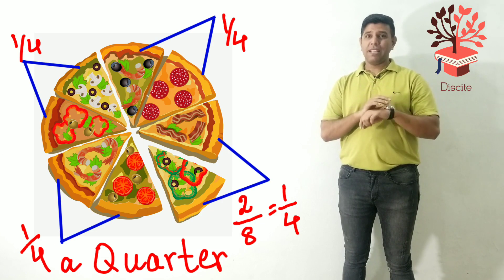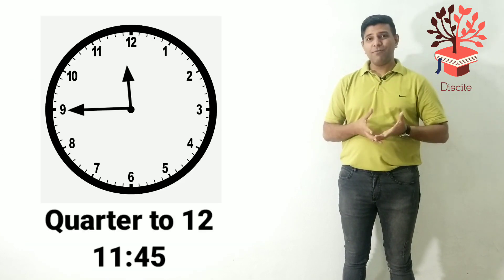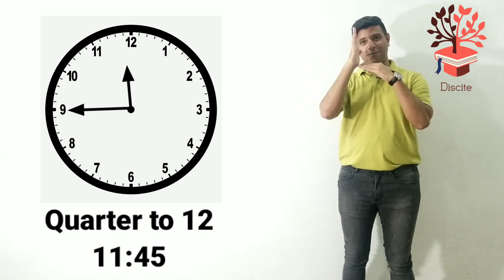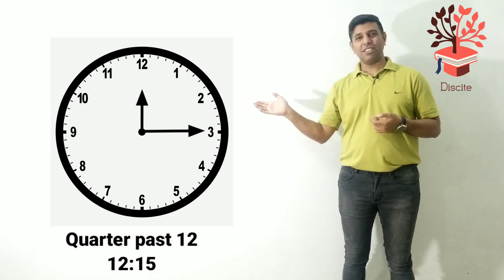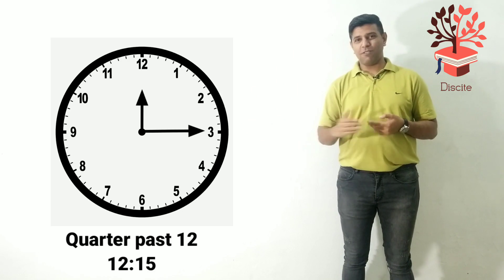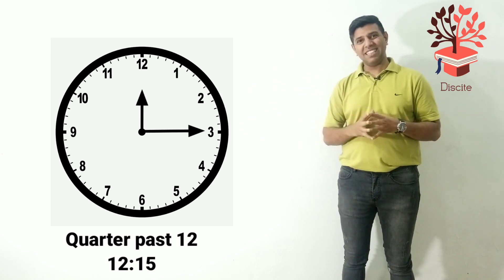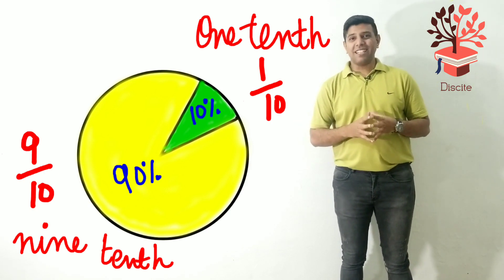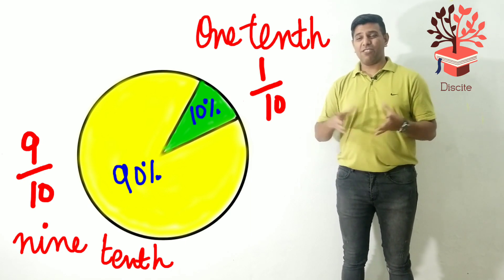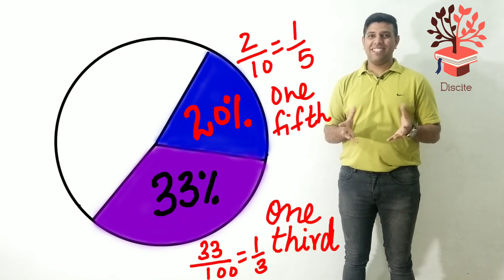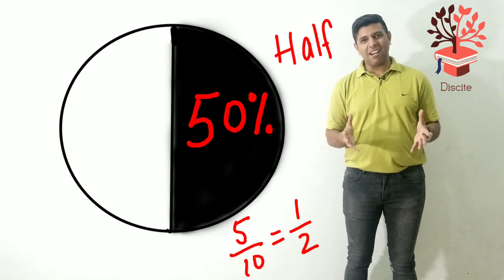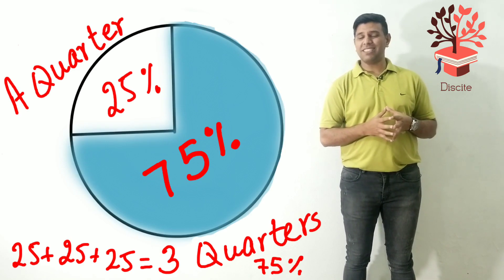Like the time is quarter to twelve — eleven forty five. Quarter to twelve, so it's a quarter less than twelve. Or it could be quarter past twelve, fifteen past twelve, twelve fifteen. So you need to look at these things. Like one tenth — one out of ten is one tenth. Ten percent is one tenth of a hundred. For example, if it's twenty out of a hundred it's one fifth. If it is thirty three it's one third. If it's fifty it's a half. And if it is seventy five percent it is three quarters.